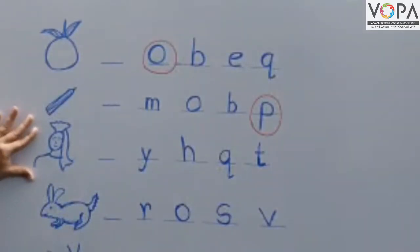What is this? This is the queen. Q for queen. Q-U-E-E-N. The first letter of queen is Q. So we circle round the Q.